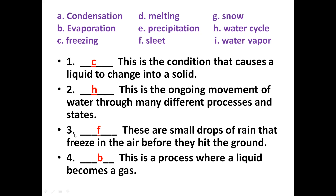Number three: these are small drops of rain that freeze in the air. The answer is sleet. Sleet begins in the liquid state of water, but due to cool temperatures on the way down it becomes solidified — the raindrops freeze in the air before they hit the ground. This type of precipitation is sleet. Answer number three is F.